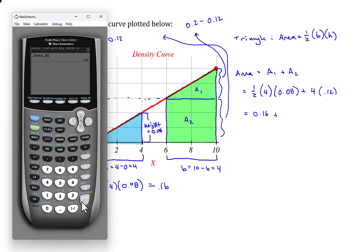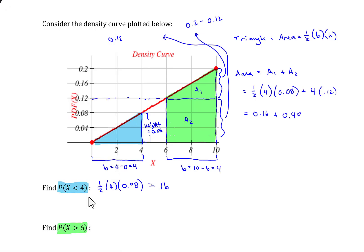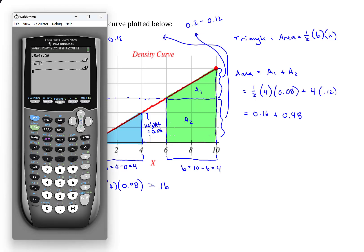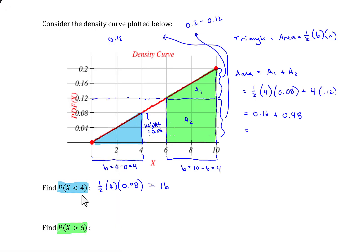And let's calculate 4 times 0.12. That is 0.48. So the sum between these two things, 0.48 and 0.16, is 0.64. And that's going to be the probability of the green region, which is the overall probability we're looking for.